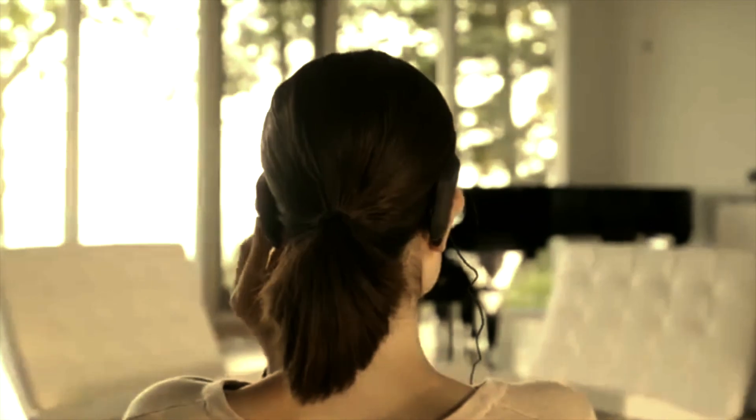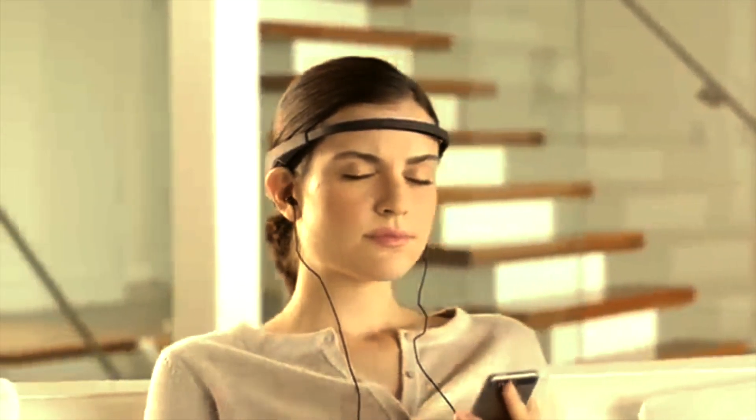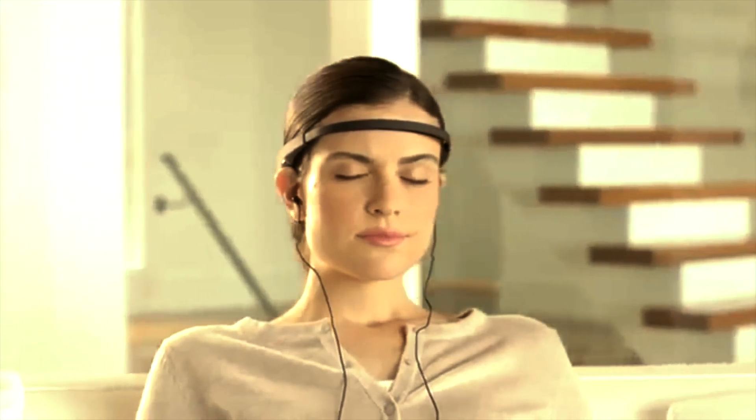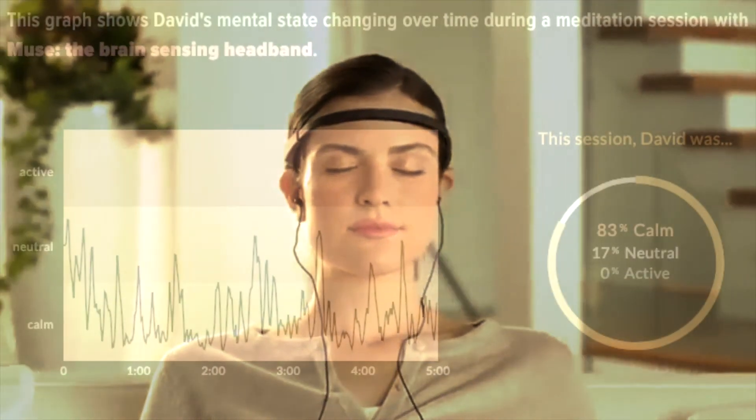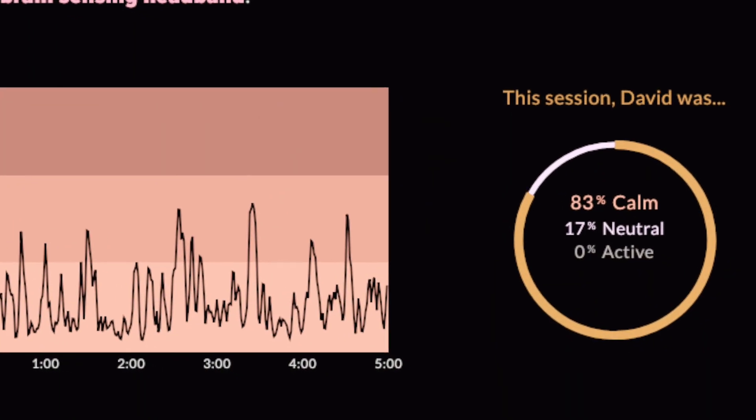After a five-minute session, which begins with a brief calibration and short introduction, it will produce a brain activity chart showing how many minutes were spent calmly, neutrally, or actively.